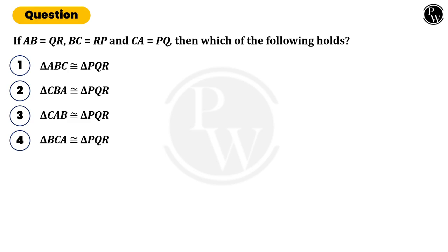If AB is equal to QR, BC is equal to RP and CA is equal to PQ, then which of the following holds?